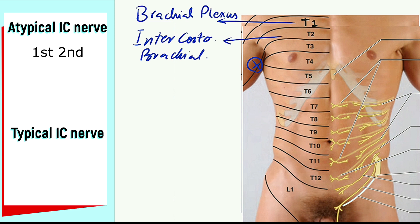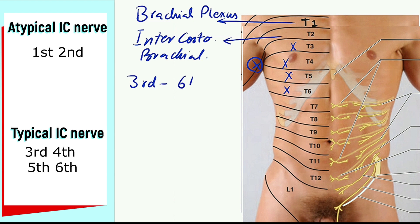The typical intercostal nerves are T3, T4, T5, and T6 — that is, the 3rd to 6th intercostal nerves. These are the typical intercostal nerves as they supply only the intercostal spaces, only the thorax.